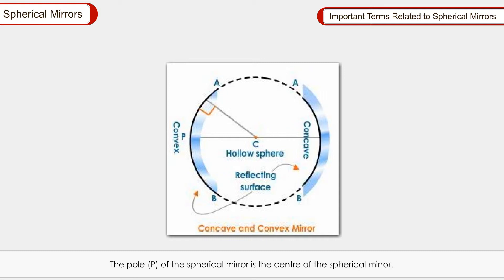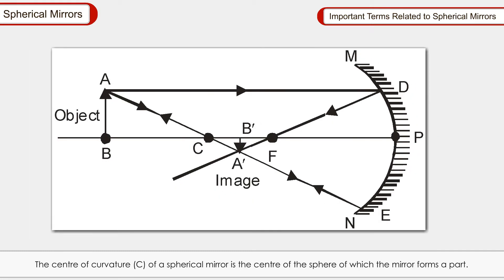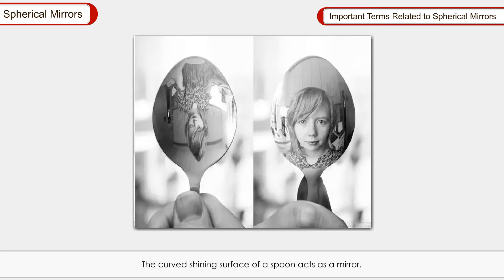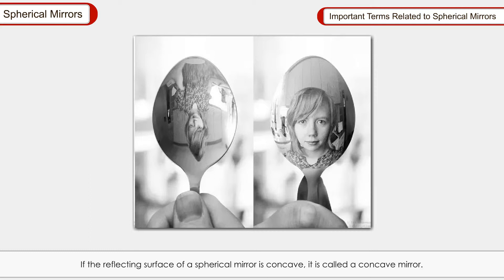Important terms related to spherical mirrors: The pole P of a spherical mirror is the centre of the mirror. The centre of curvature C is the centre of the sphere of which the mirror forms a part. The radius of curvature is the radius of that sphere. The principal axis is the line joining the pole and the centre of curvature. The curved surface of a spoon acts as a mirror — if the reflecting surface is concave, it is a concave mirror; if convex, it is a convex mirror.